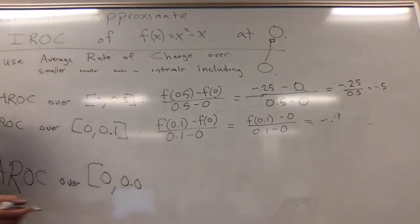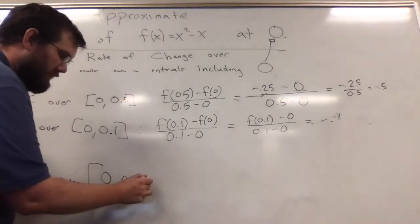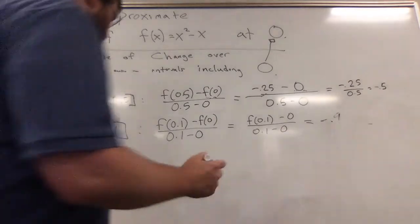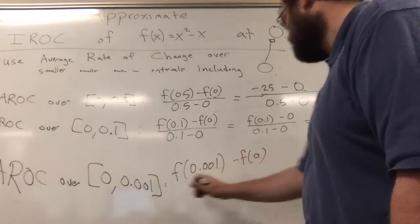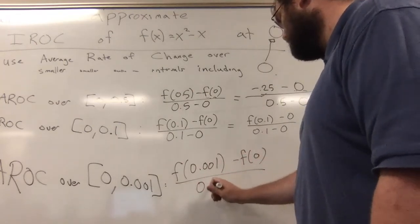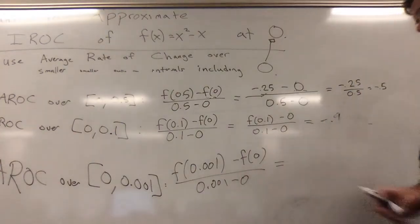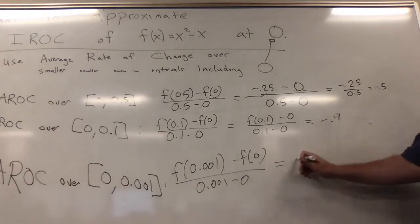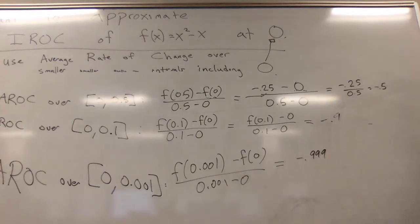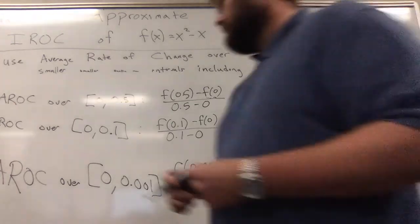So you look at f(0.001) - f(0) over 0.001 - 0, which is equal to negative 0.999. And I'm just going to write a really big smiley face somewhere else.